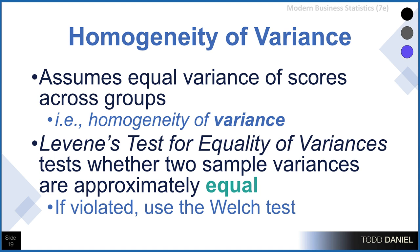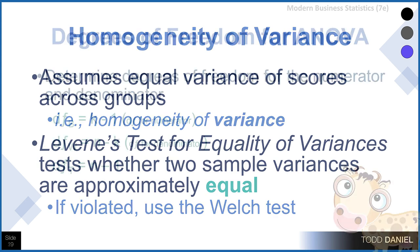As with the t-test, ANOVA has an assumption for homogeneity of variance — the variances within each group should be approximately equal. This is tested by Levene's test for equality of variances. If Levene's test is significant, the assumption has been violated, and the best solution is to use Welch's ANOVA to address that violation. However, ANOVA is robust to violations of homogeneity of variance when sample sizes are equal. If there is a violation but each group has the same sample size and group sizes are over 30, you are usually safe to use ANOVA instead of Welch's test.